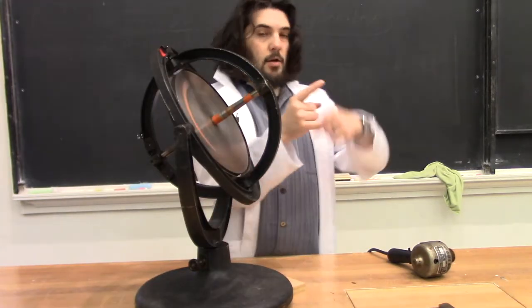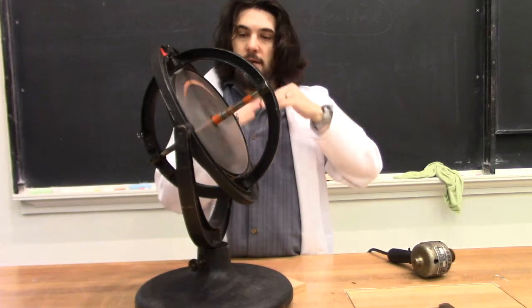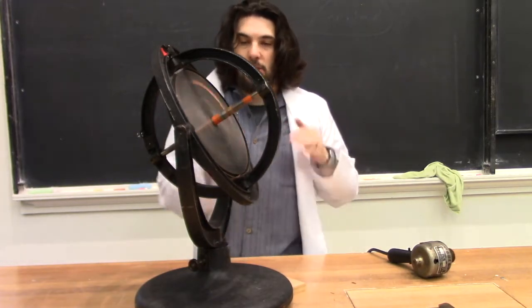Now that it's rotating along this axis, it's going to want to stay rotating on that axis. And it's going to maintain that orientation no matter which way I twist these outer rings.